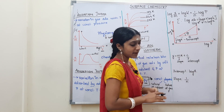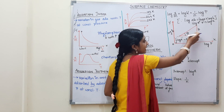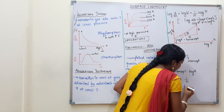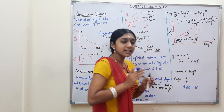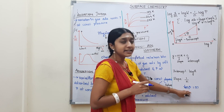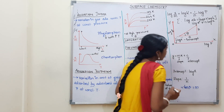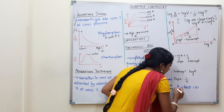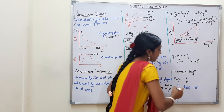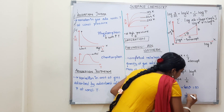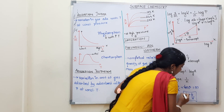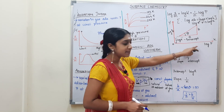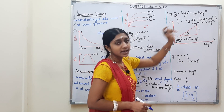To find the slope from the graph using a triangle: tan θ = opposite/adjacent = B/A. So the slope 1/n = B/A, where B and A are the vertical and horizontal sides of the triangle drawn on the straight-line graph. The intercept gives log k, and the slope gives 1/n.